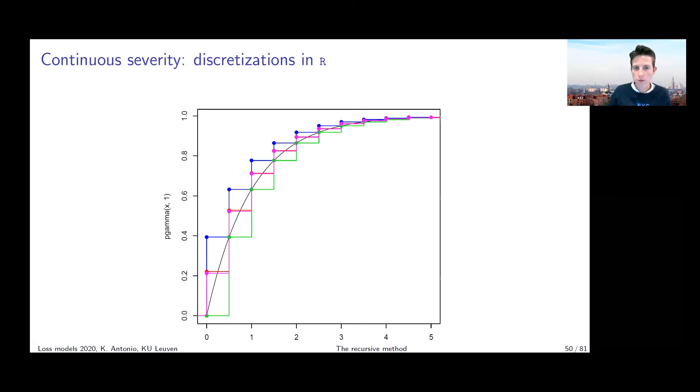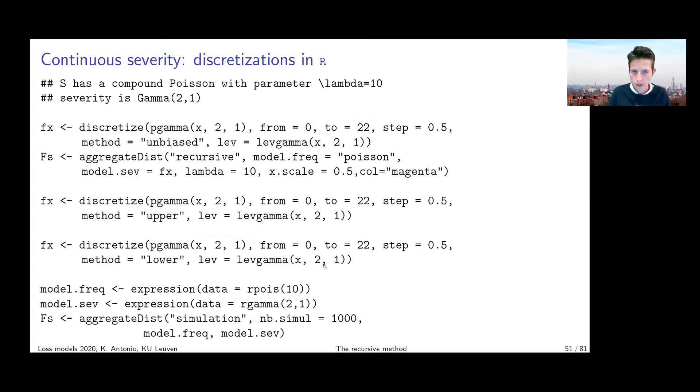The one in blue and the one in green are other types of approximations which are available in the actual package in R. We're not going to discuss these, but you see that the blue one is consistently above the CDF and the green one below. That's just another way of constructing the approximation.